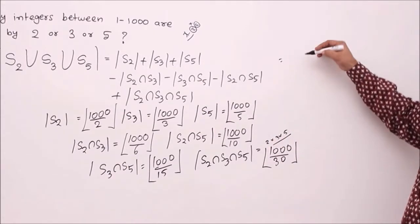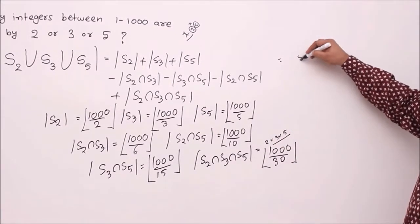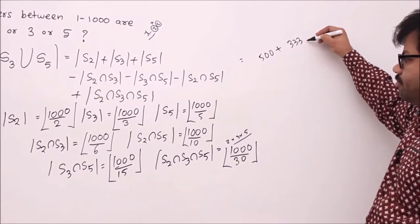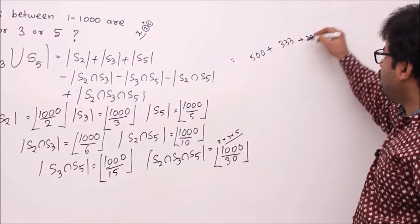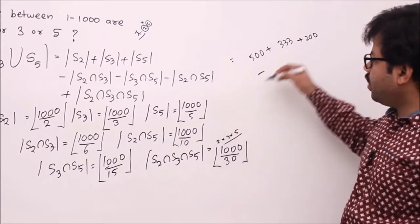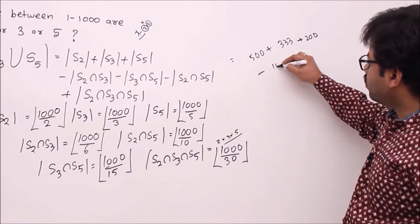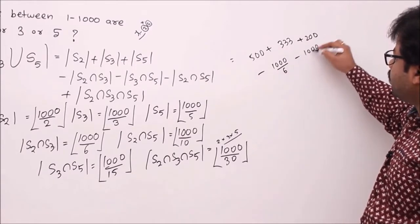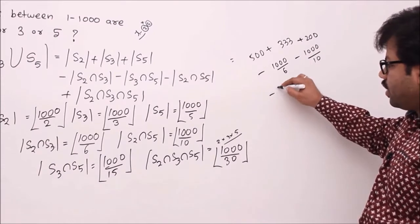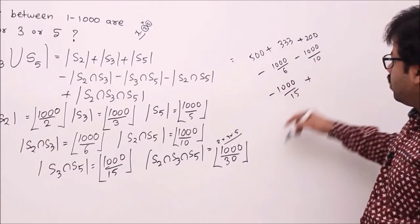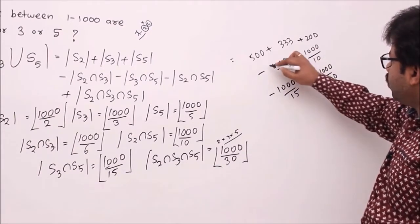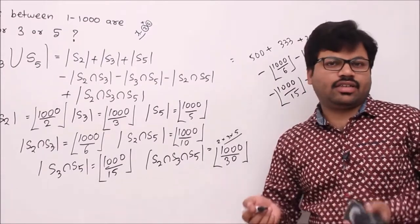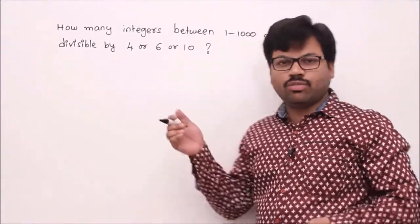Let's simplify the formula. Answer = floor(1000/2) + floor(1000/3) + floor(1000/5) − floor(1000/6) − floor(1000/15) − floor(1000/10) + floor(1000/30) = 500 + 333 + 200 − 166 − 66 − 100 + 33 = 734.